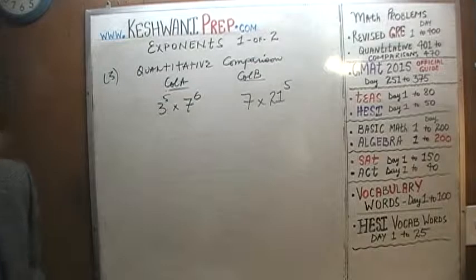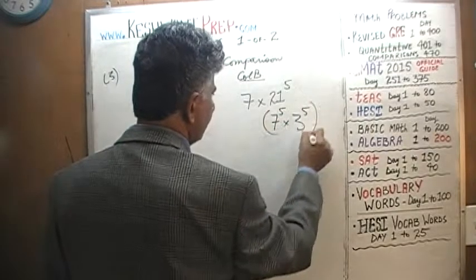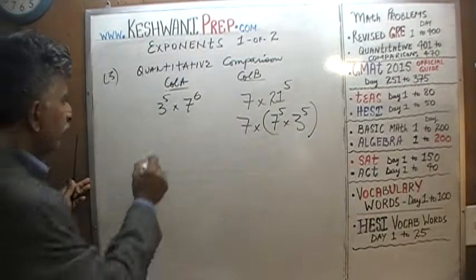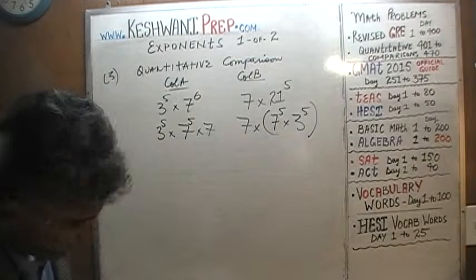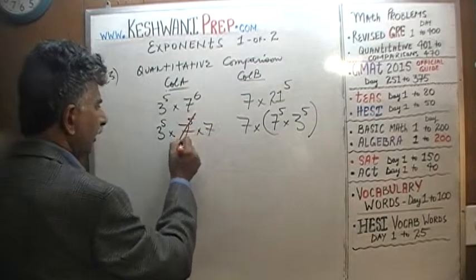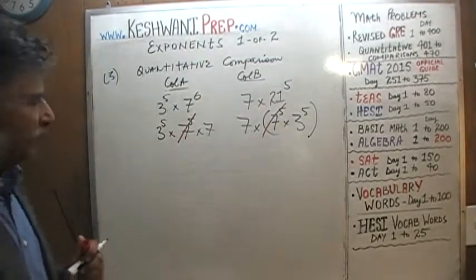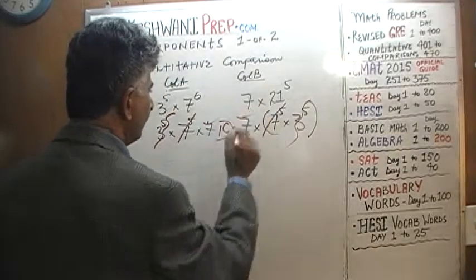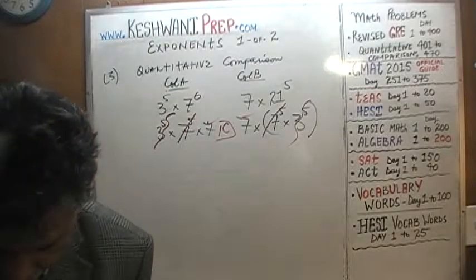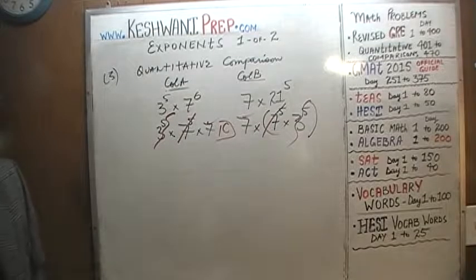The key here is that 21 raised to 5 equals 7 raised to 5 times 3 raised to 5. So Column B becomes 7 times 7 raised to 5 times 3 raised to 5. Column A has 3 raised to 5 times 7 raised to 6, which can be written as 3 raised to 5 times 7 raised to 5 times 7. We see 7 raised to 5 in both columns — divide both by 7 raised to 5. We see 3 raised to 5 in both — divide both by 3 raised to 5. We end up with 7 versus 7. The answer is C.